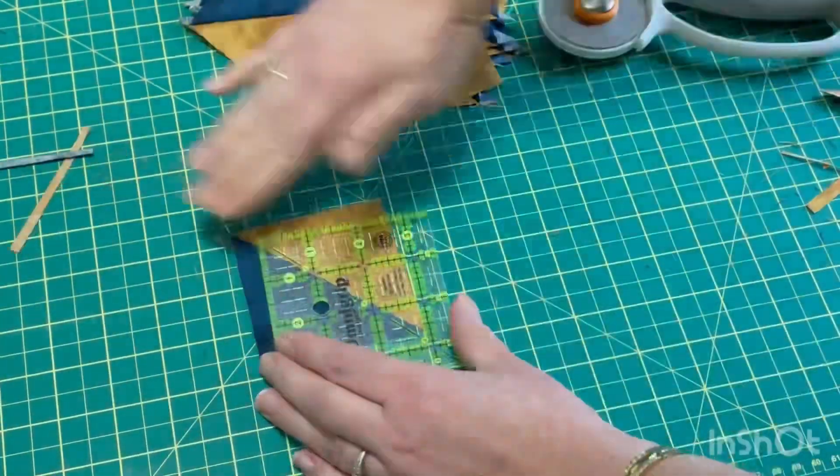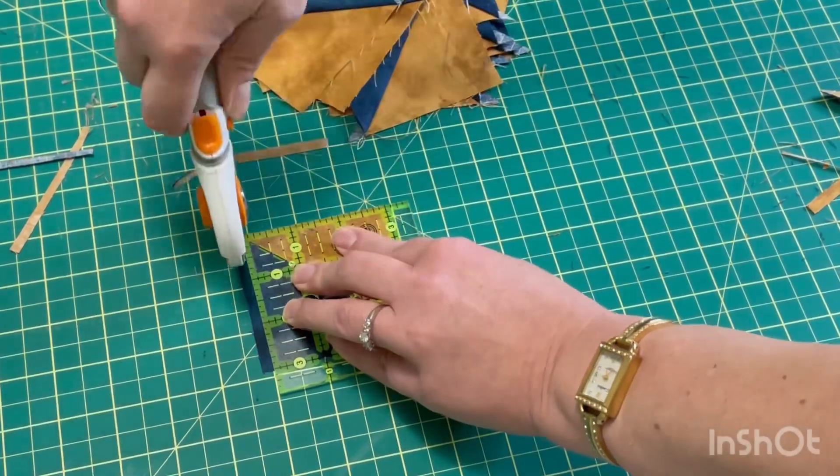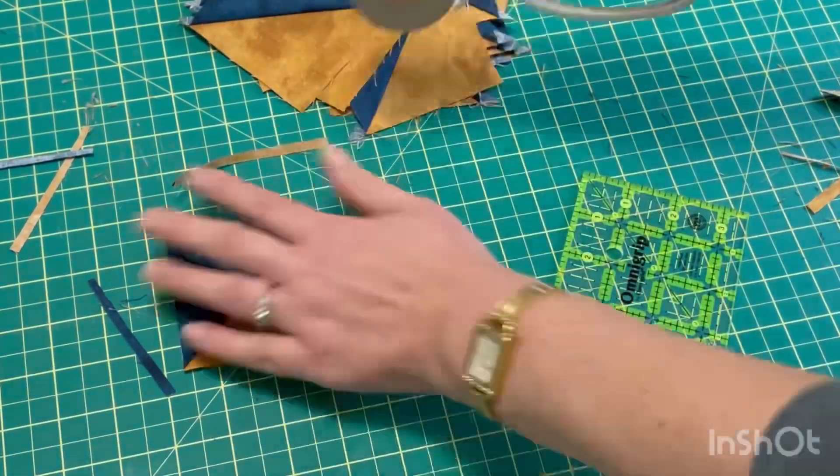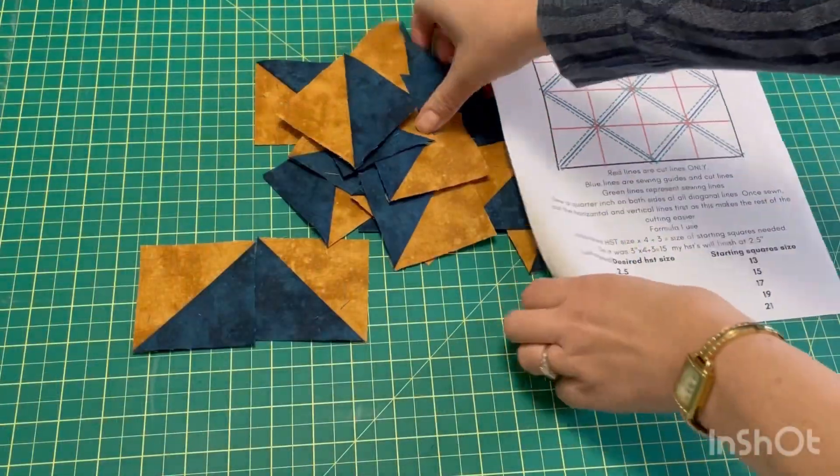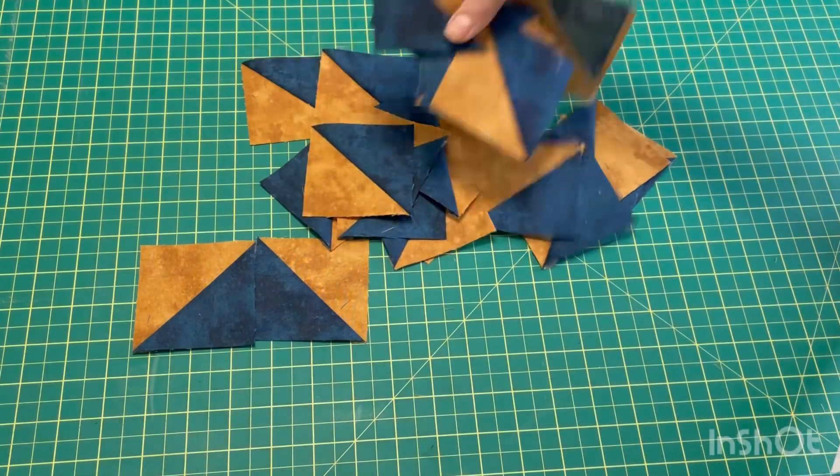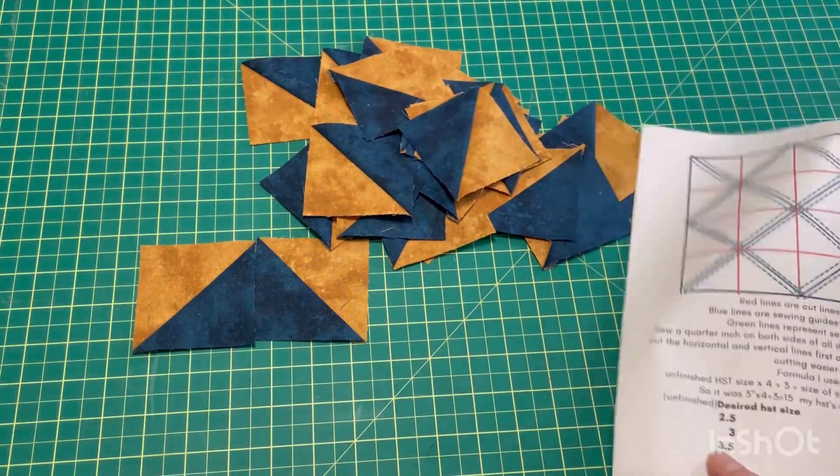I did give myself a little extra wiggle room for trimming because I didn't want to risk having my blocks too small. If you're anything like me your stitch lines aren't always a hundred percent, so this is just a little safety net. My half square triangles are three inches square and they'll finish at two and a half.